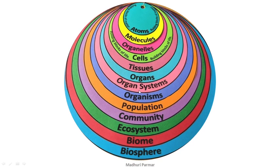Organs come together to form organ systems. Just think of your digestive system — it is made up of multiple organs including your stomach, pancreas, intestines, mouth, buccal cavity, teeth, and all of those. Different organ systems like nervous system, circulatory system, and digestive system, all put together, form an organism.